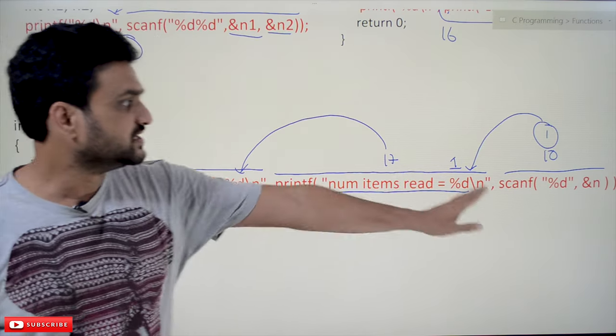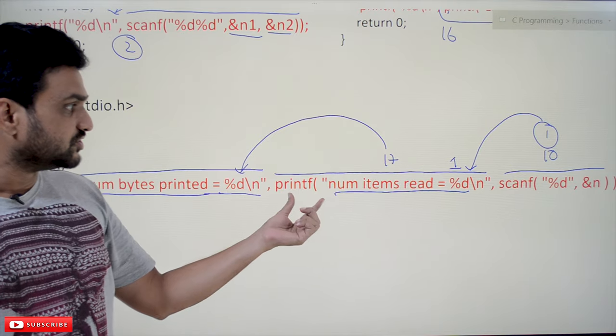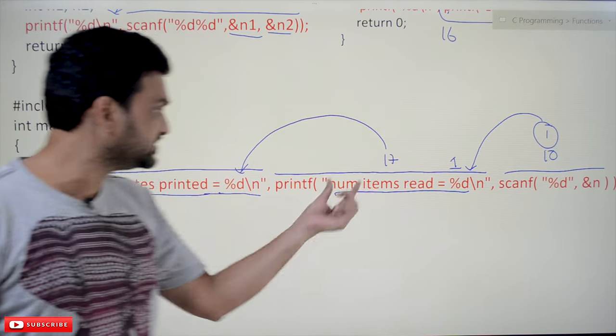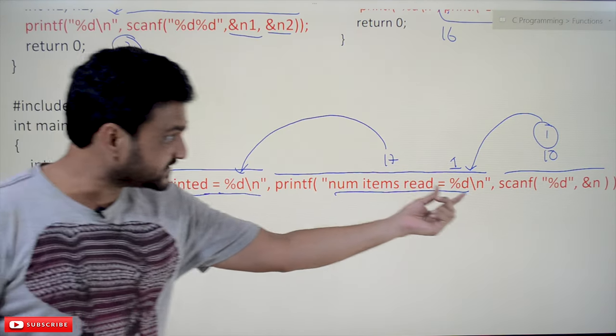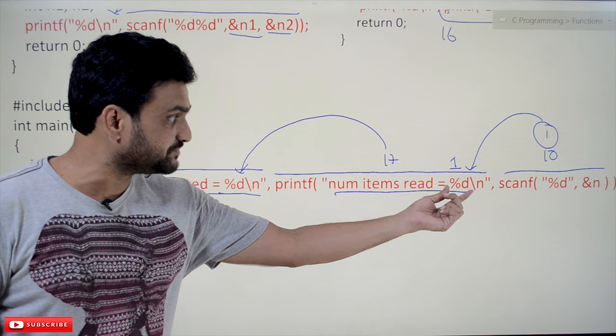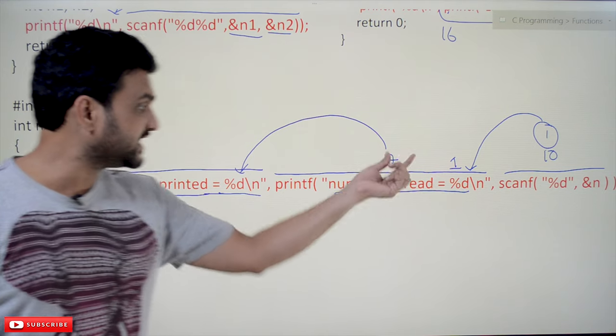Those 17 characters - so this scanf and this is the input for this printf. So this printf, whatever the characters that it prints, those number of characters will be shown as the output of this percentage d.